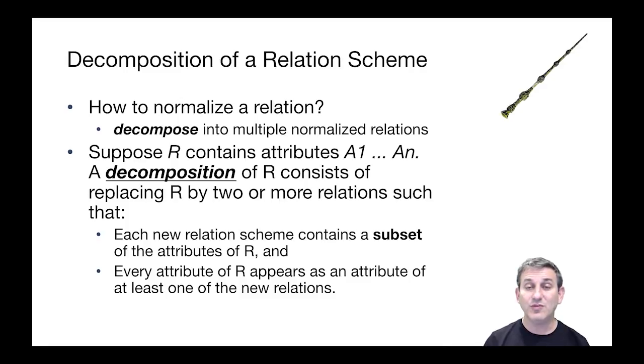Suppose R contains attributes A1 through An. A decomposition of R consists of replacing R by two or more relations such that each new relation scheme contains a subset of the attributes of R, and every attribute of R appears as an attribute of at least one of the new relations. That's what a decomposition is.